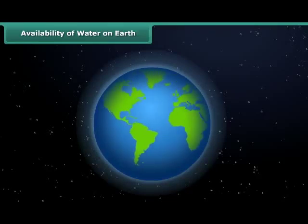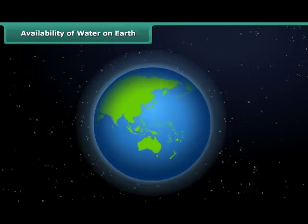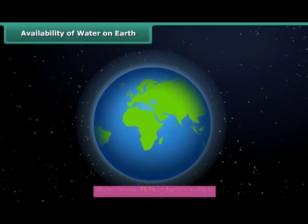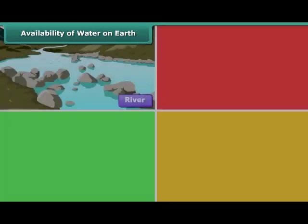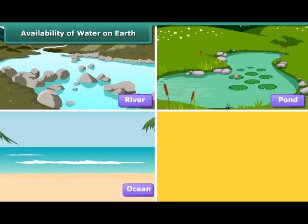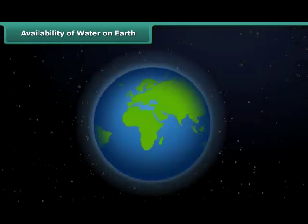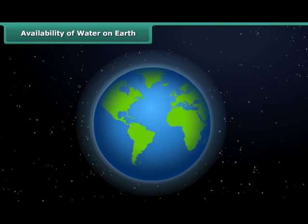Earth is called the blue planet. Can you guess the reason? Water covers 71% of earth's surface in the form of rivers, ponds, oceans and streams, thus making it appear blue in color when seen from space.